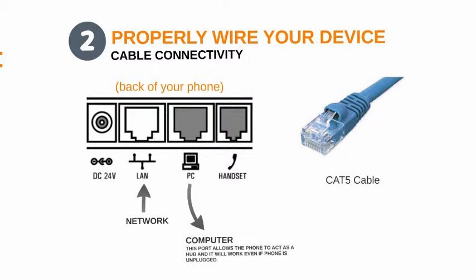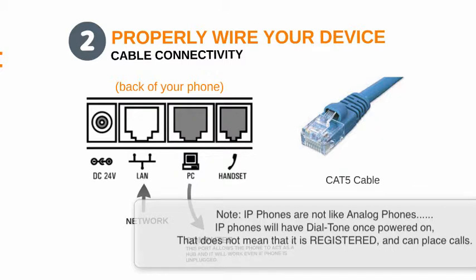When it comes to properly cabling your device, on the back, pretty much every phone is the same, minus the PC port. Some devices don't have the PC port, but most devices made in the last 10 years will. You've got a power adapter plug input, a local area network input, a PC input, and a fourth one for your handset input. There could be additional ones — a headset input or other specialized jacks on more advanced models — but these four ports are how we cable up your phone.